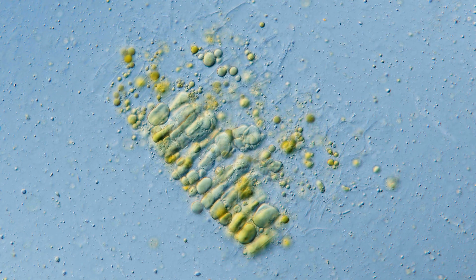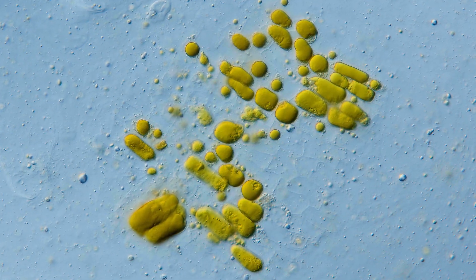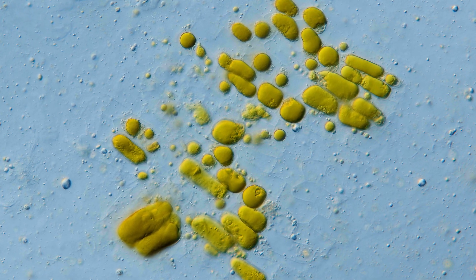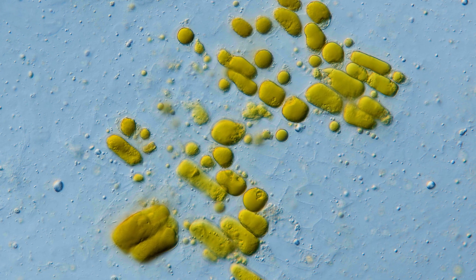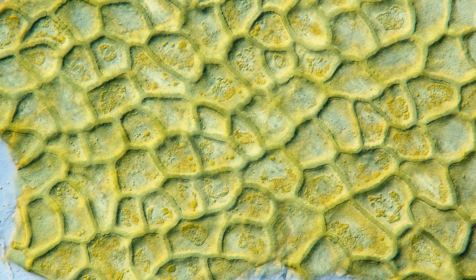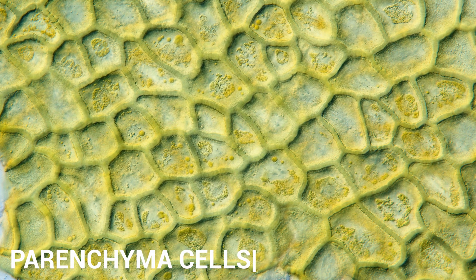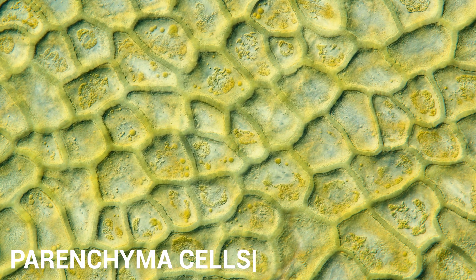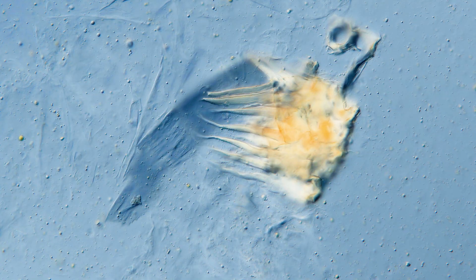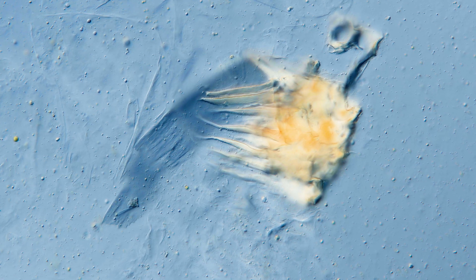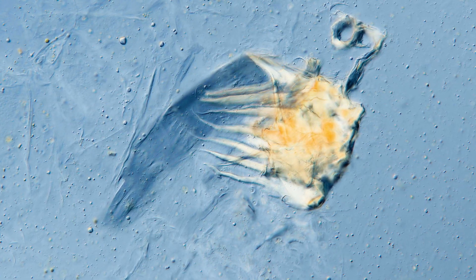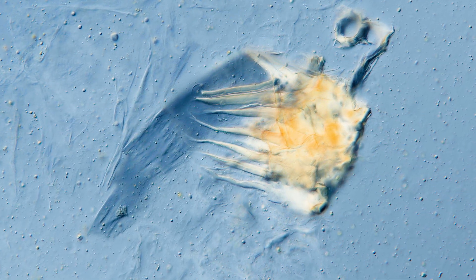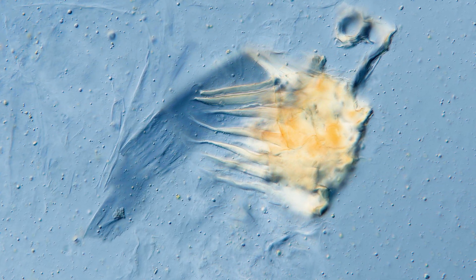Capsaicin is the chemical that makes peppers hot. You may be wondering: can we see it under the microscope? Unfortunately, we can't. Capsaicin is a colorless, oil-like compound primarily found in the membrane that holds the seeds — that's why seeds are so hot.